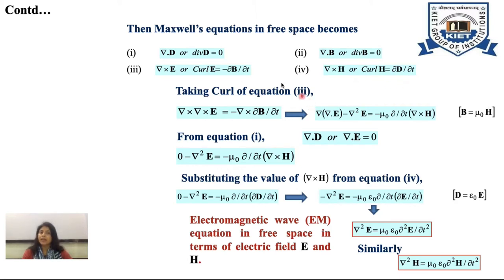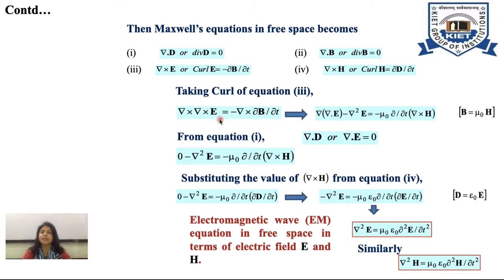If we take the curl of the third equation, curl of curl of E equals minus curl of del B over del t. Using vector identity, the left-hand side gives del(del dot E) minus del squared E, which equals minus mu naught times del by del t of del cross H, after substituting B equals mu naught H.